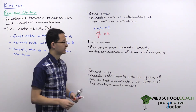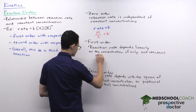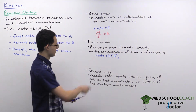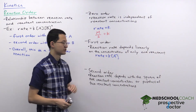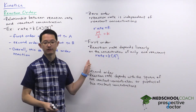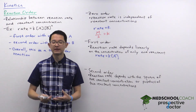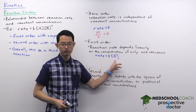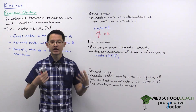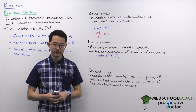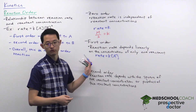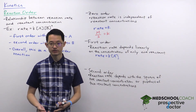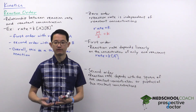A first order reaction has one reactant to the power of one. The reaction rate depends linearly on the concentration of one reactant — if you double the concentration of A, you double the reaction rate; if you triple it, you triple the reaction rate. A notable example relevant to the MCAT is SN1 reactions, which are a good example of first order reactions.